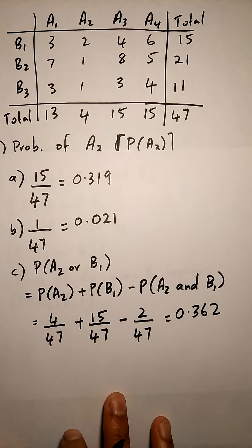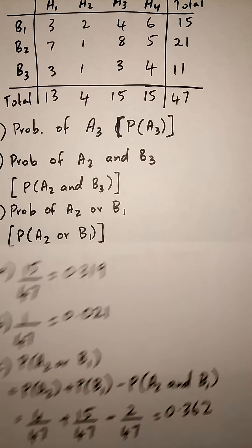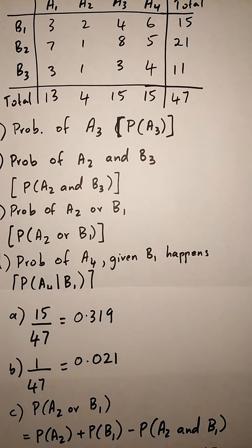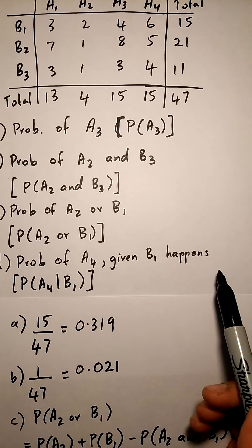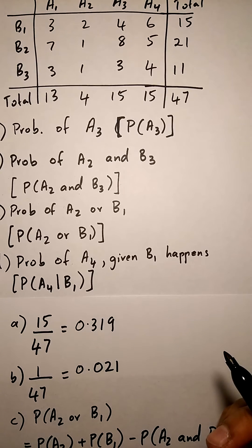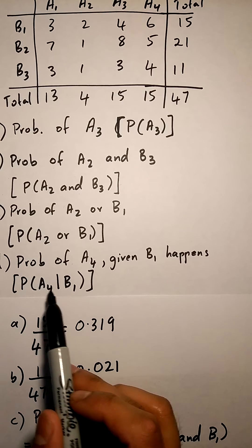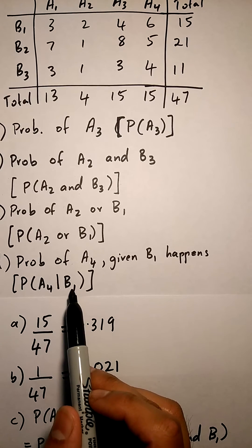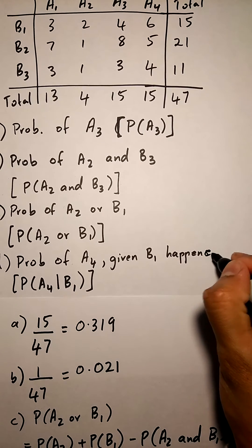And then we calculate that. The last possible question they can ask us is the probability of something given something else happens or has already happened. For example, the probability of A4 given that B1 has already happened.